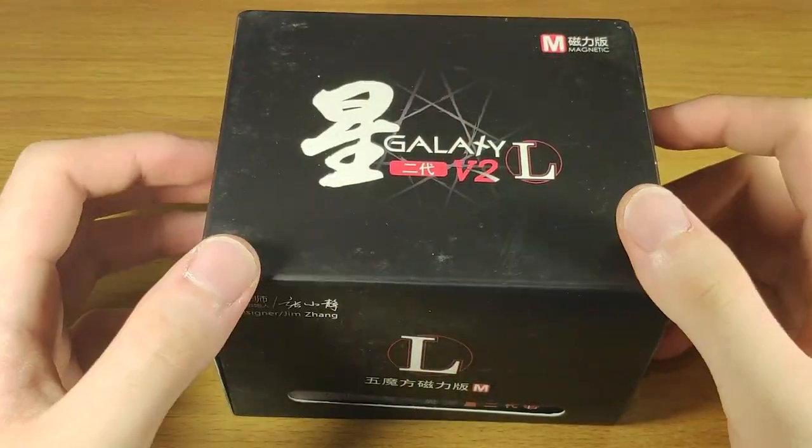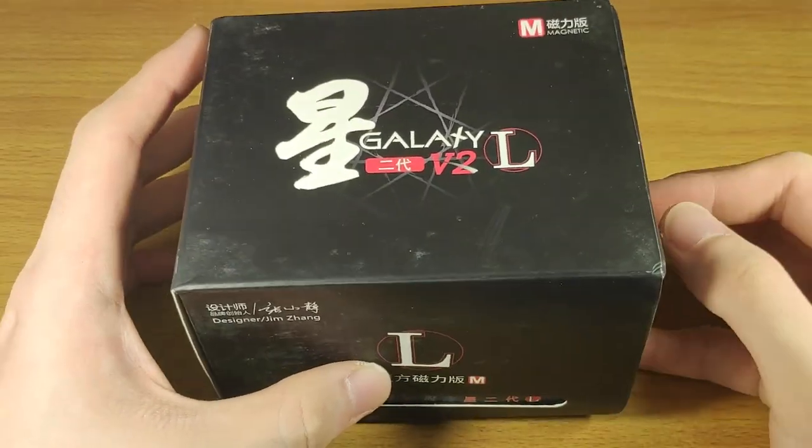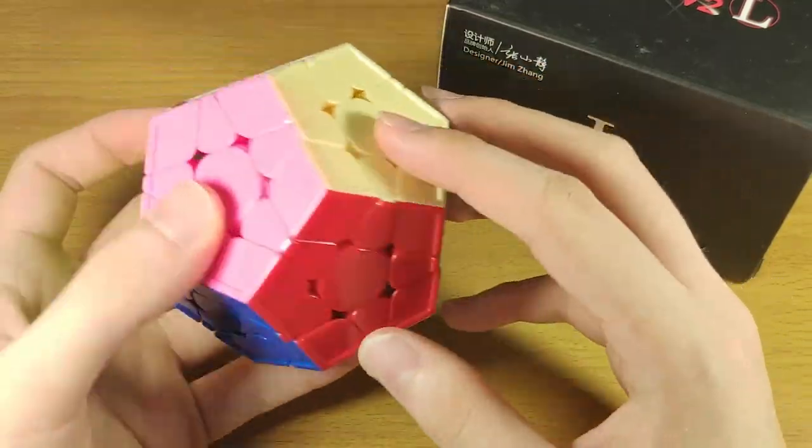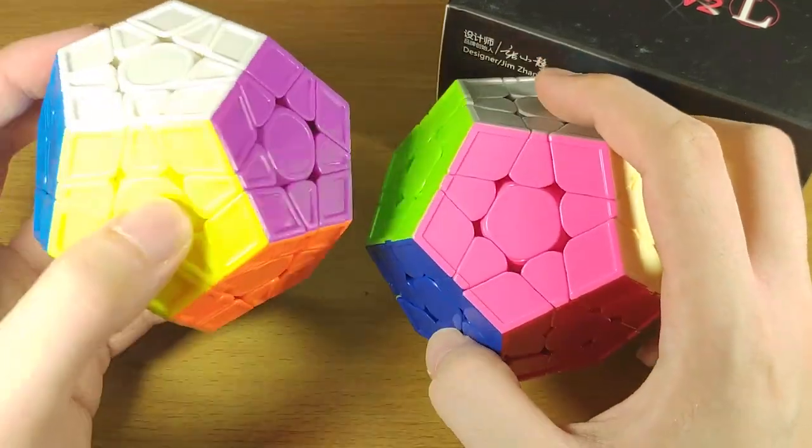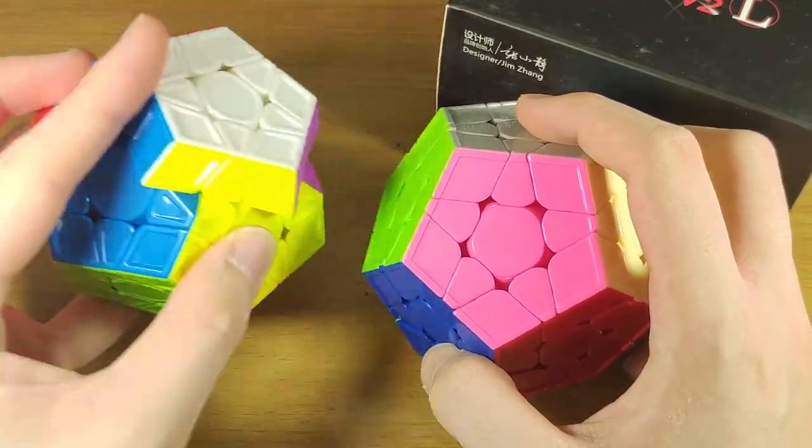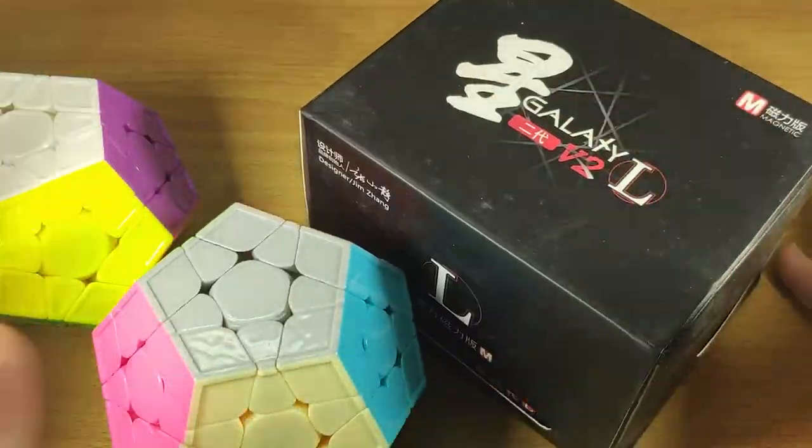Now we have the cream of the crop of this unboxing, the Galaxy V2 LM. So far I don't actually have any magnetic megaminxes in my collection. Right now I'm currently borrowing Nathan the Cuber's Galaxy V2 M, so let's see how this compares to my other megaminxes.